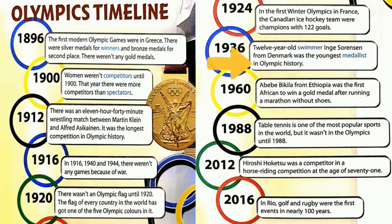1936. 12-year-old swimmer Inger Sorensen from Denmark was the youngest medalist in Olympic history. 1960. Abebe Bikila from Ethiopia was the first African to win a gold medal after running a marathon without shoes.